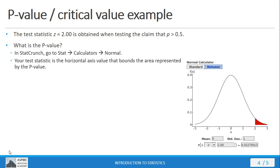So, here in StatCrunch, I got the normal calculator, and notice I have the standard normal distribution. So, the mean value of zero, standard deviation of one. I put in my test statistic here on the left.